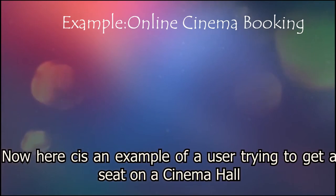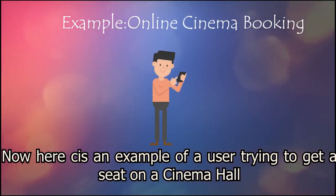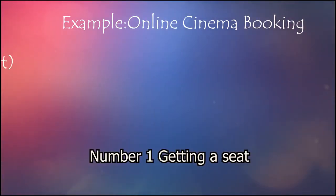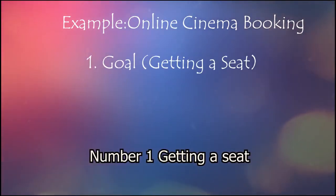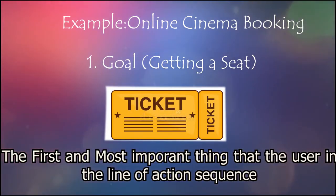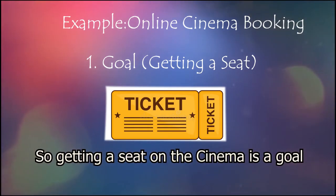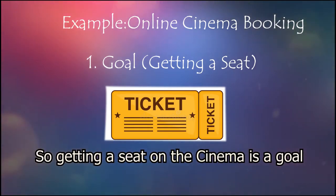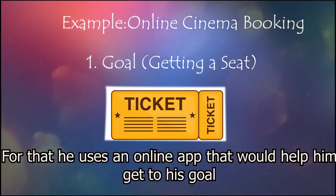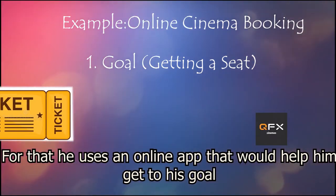Here is an example of a user trying to get a seat in a cinema hall. Number 1: Getting a seat. The first and most important thing is that the user needs to know he wants a ticket for a movie, so getting a seat at the cinema is the goal. For that, he uses an online app that would help him reach his goal.